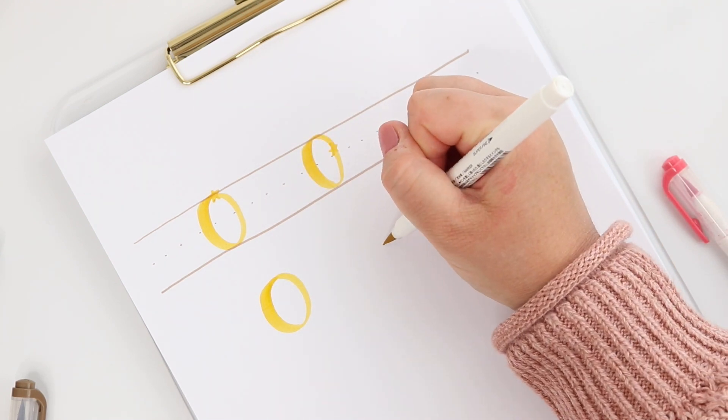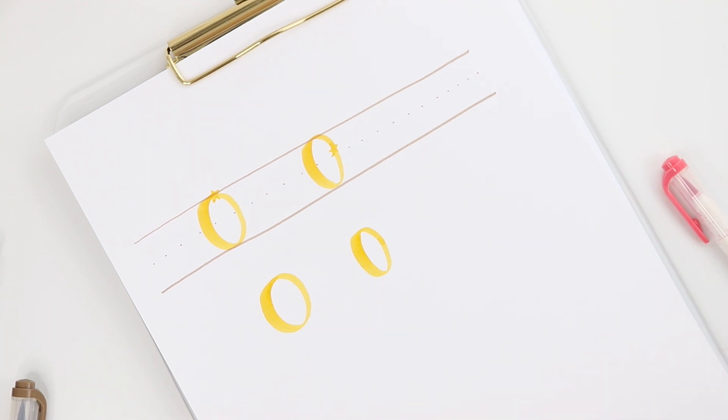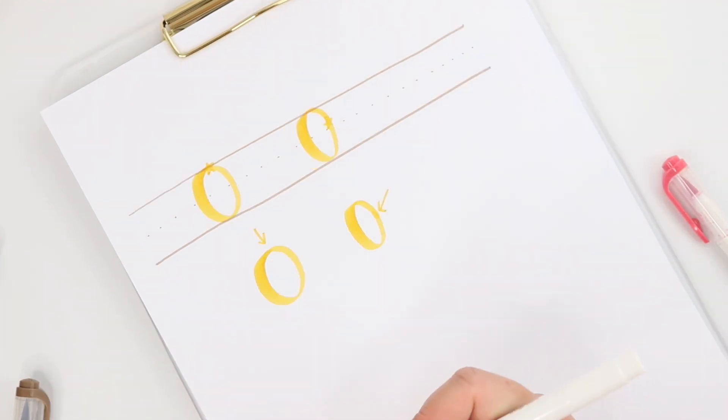But here is where the trick comes in. If you move that starting point over to the right hand side of your oval maybe about the two or three o'clock mark then your oval will both start and end with a pretty thin line.